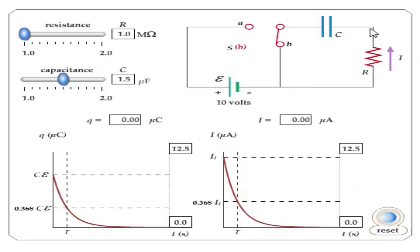Without the power supply, this circuit is a circuit for the discharging process. In order to determine whether it is a charging or discharging process, we always have to focus on the presence or absence of a power supply or battery. Without the battery, this circuit is for the discharging process.